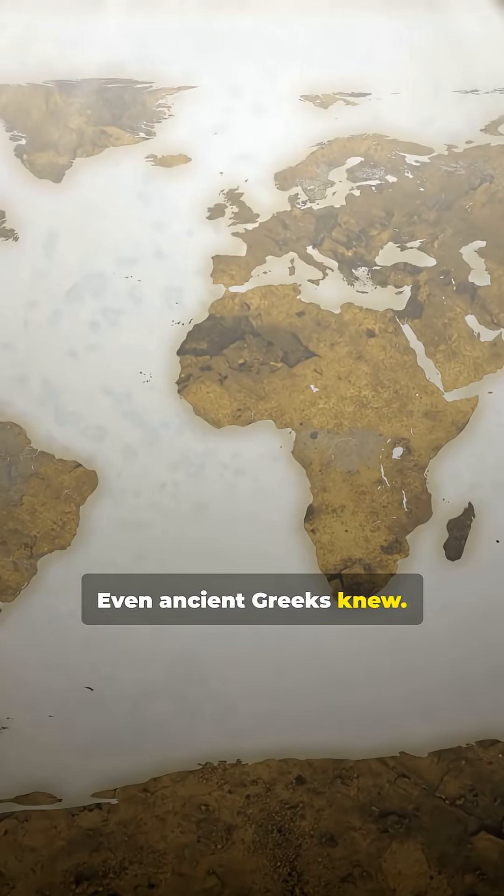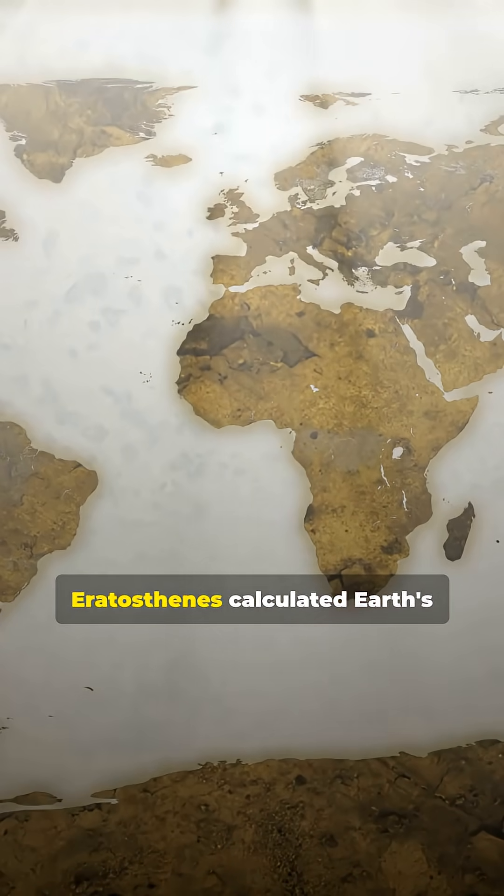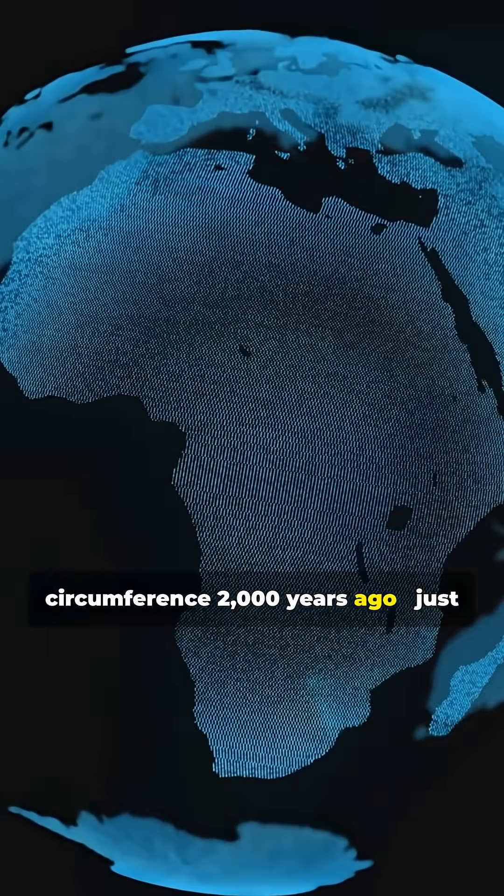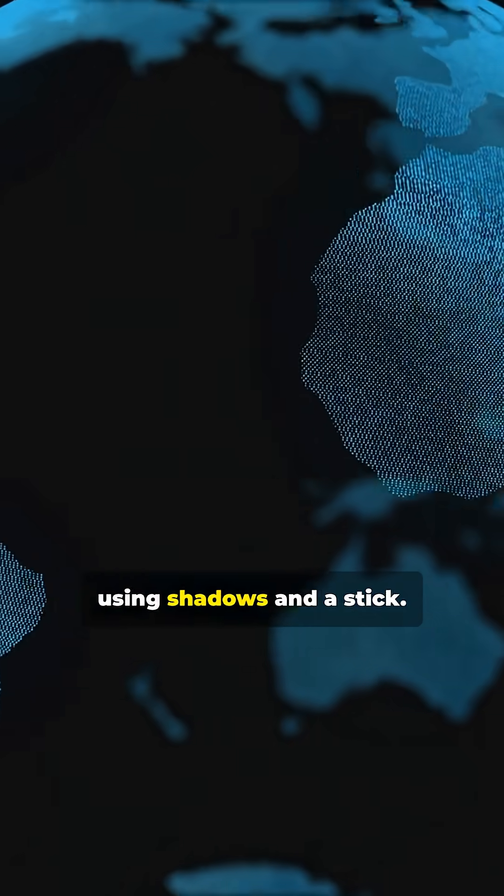Even ancient Greeks knew. Eratosthenes calculated Earth's circumference 2,000 years ago, just using shadows and a stick.